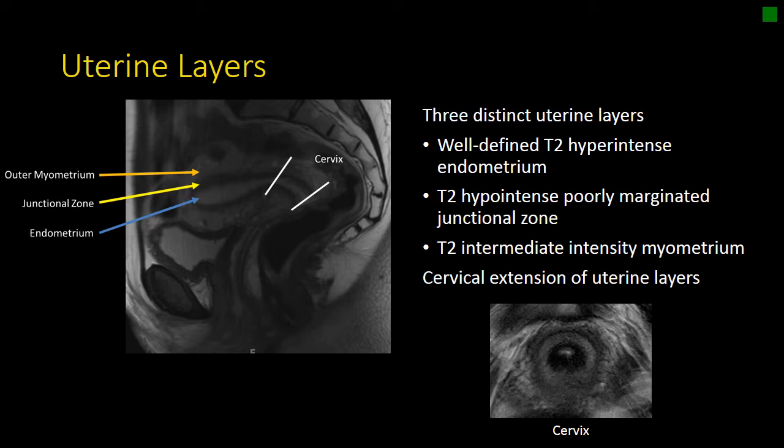The outer layer is the myometrium. It is the muscular portion of the organ. It is mildly T2 hyperintense to skeletal muscle on MRI, and has a similar density to skeletal muscle on CT. The cervix can be thought of as an extension of the uterus, and the three layers that we see in the uterus also extend into the cervix.